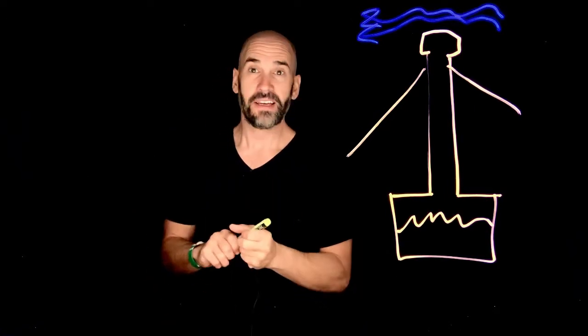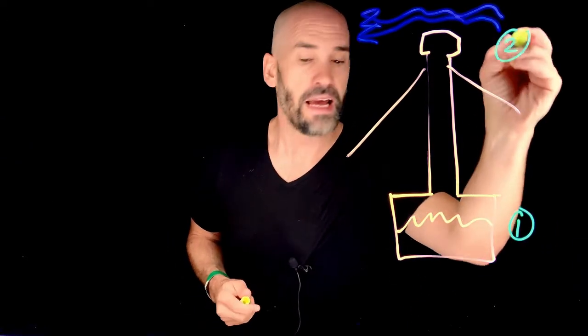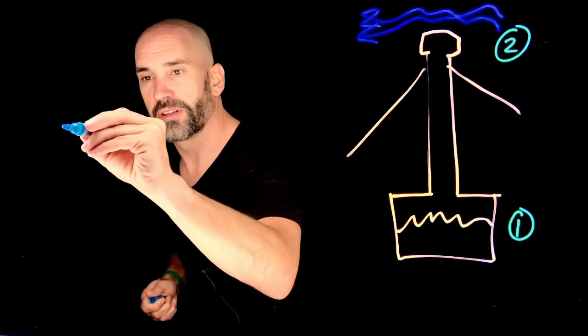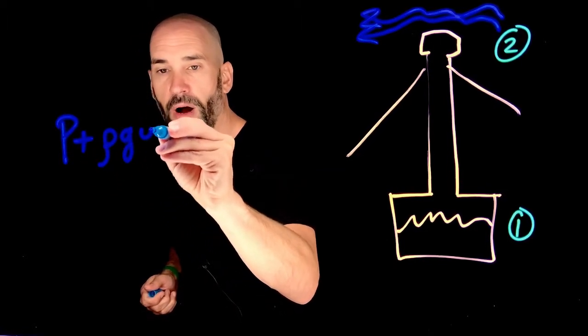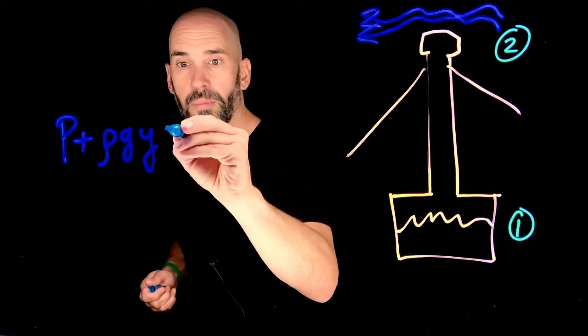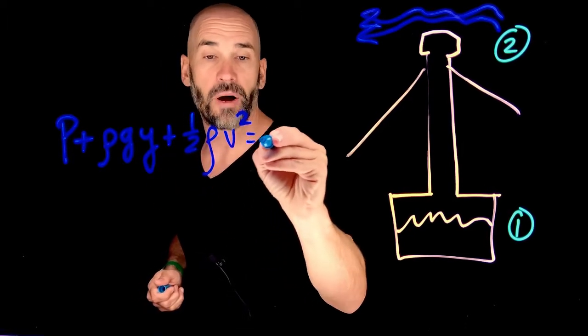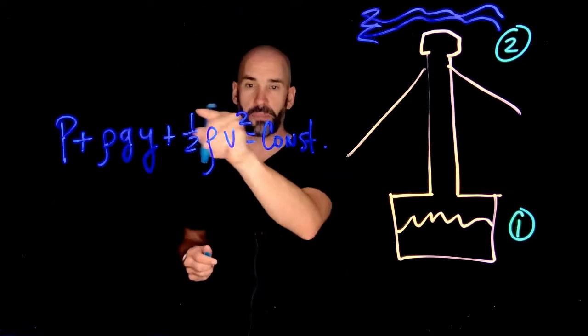Now, what does Bernoulli's Law have to say about the rate at which the smoke will rise through the chimney? Well, it's actually not that tough. We know that there's two positions here, position one and position two. And we know that according to Bernoulli's Law, this expression, the pressure plus rho gy, the elevation, plus one-half rho v squared, must be constant. This is what Bernoulli's Law says.